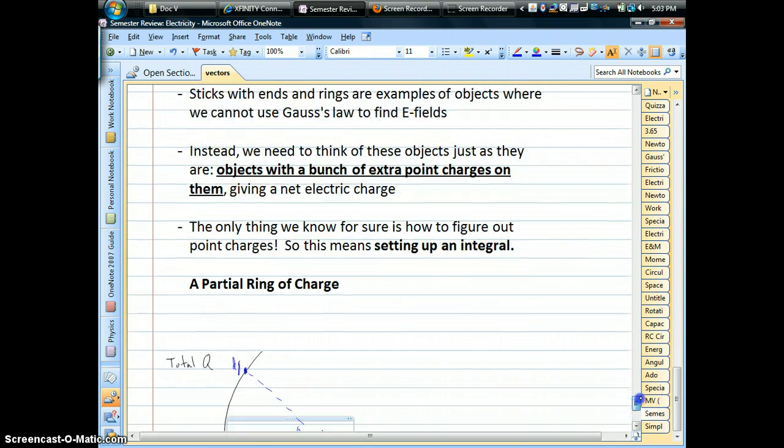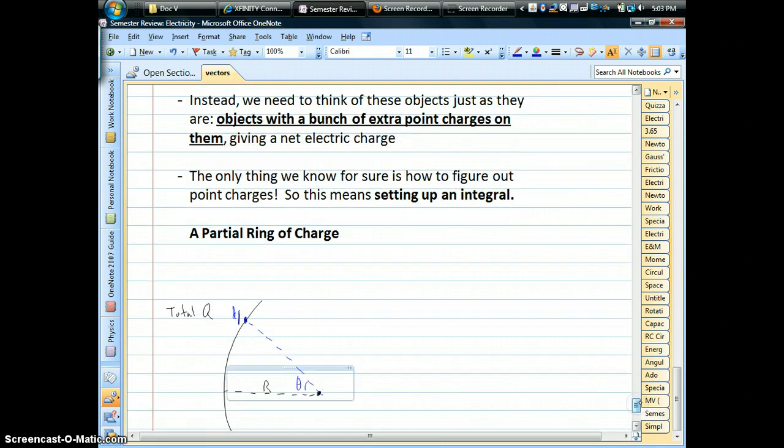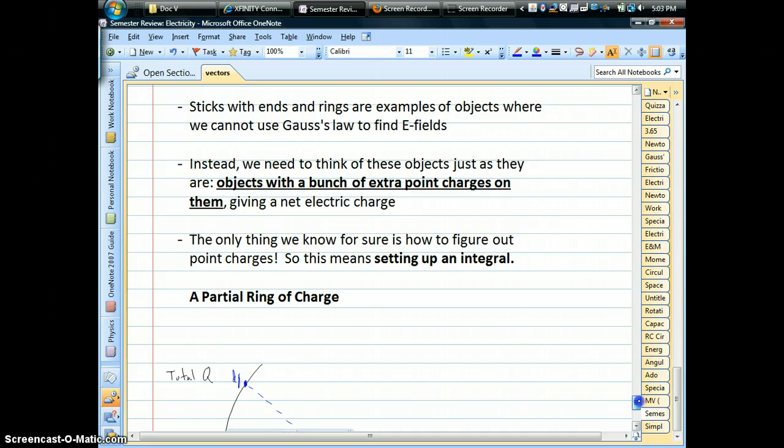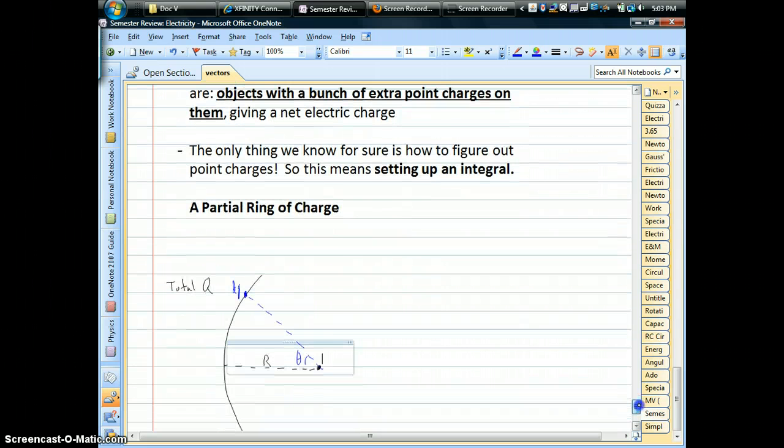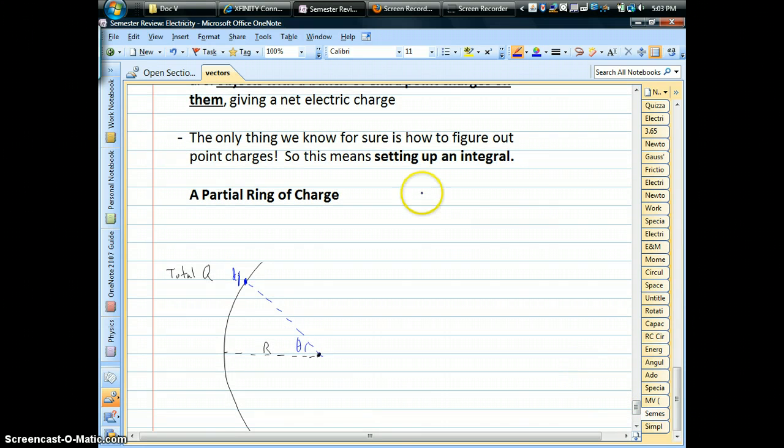These are a little trickier than a whole ring. And the thing behind this, if we can't use Gauss's Law, is we have to stick with fundamentals. So in other words, we have to think of this object as it really is, a bunch of extra point charges spread all over it. And point charges are the one thing we know how to do exactly.